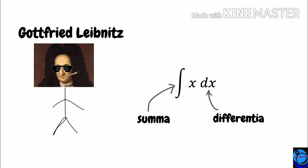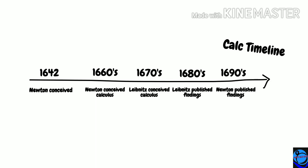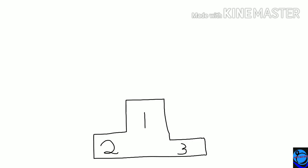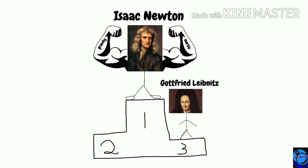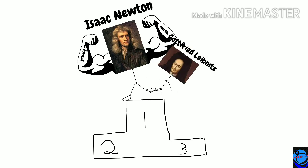So who took the credit for calculus? Newton conceived his ideas in the 1660s, while Leibniz came to similar conclusions a decade later. But Leibniz published his findings nearly a decade before Newton. Initially credit went to Newton, but after their deaths, both were attributed the title Inventors of Calculus.